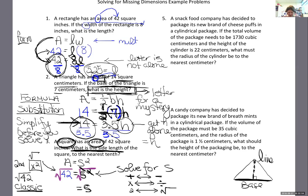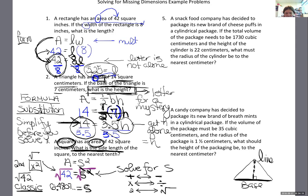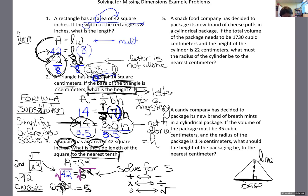I need to follow the rounding directions: to the nearest tenth, which is one decimal place. I'll cut it off right after that decimal place and consider the next number. It's 8 — that's five or higher, so I round up. The answer is 6.5 inches — plain old inches, because it's a dimension.